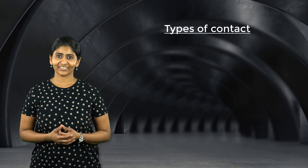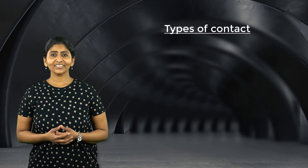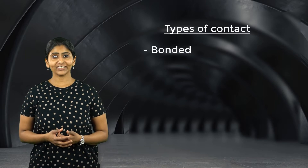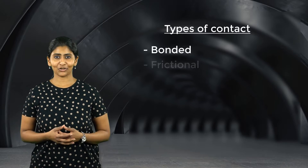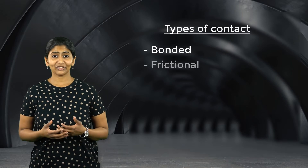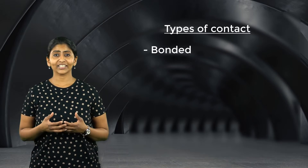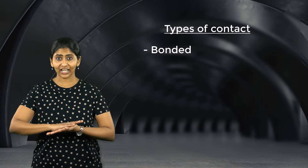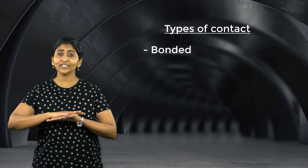Now let's look at the different types of contact that we use while modeling bolted connections. The first one is the bonded contact and the second one is the frictional contact. Just as its name suggests, bonded contact implies that the two surfaces in contact are bonded to each other.